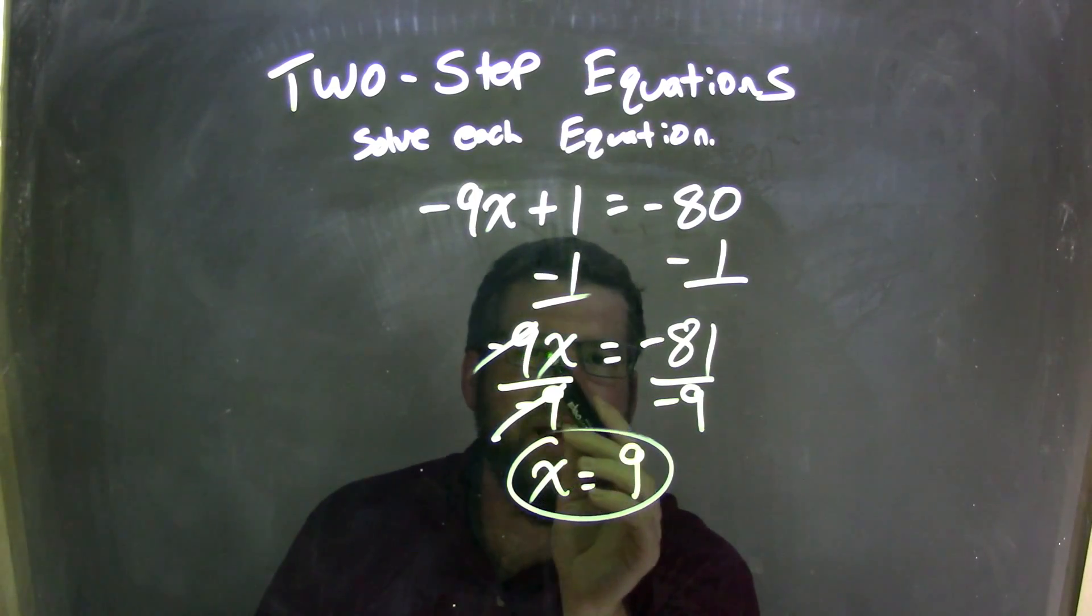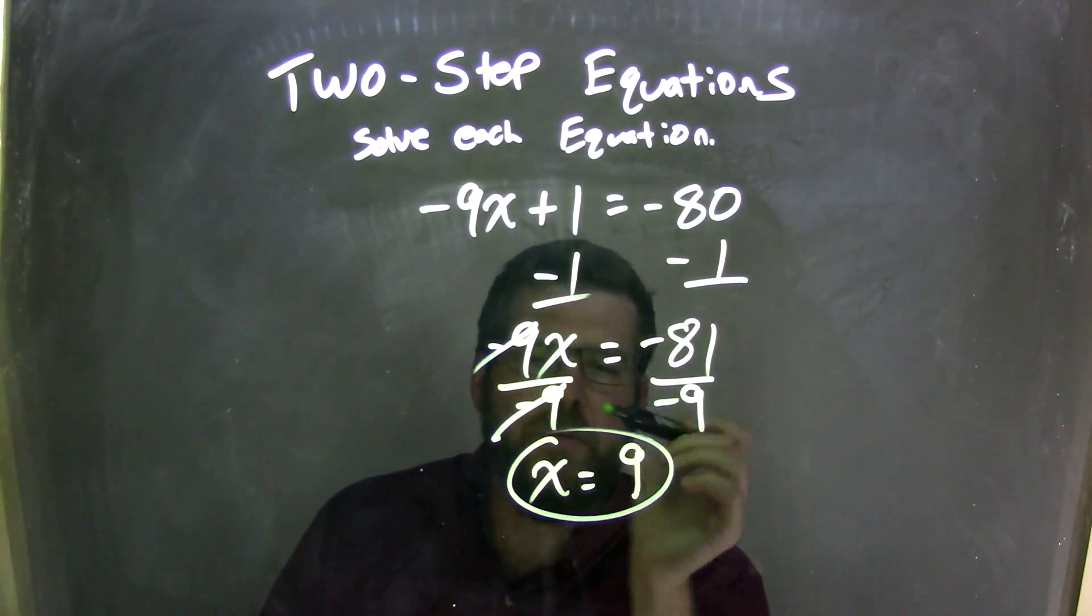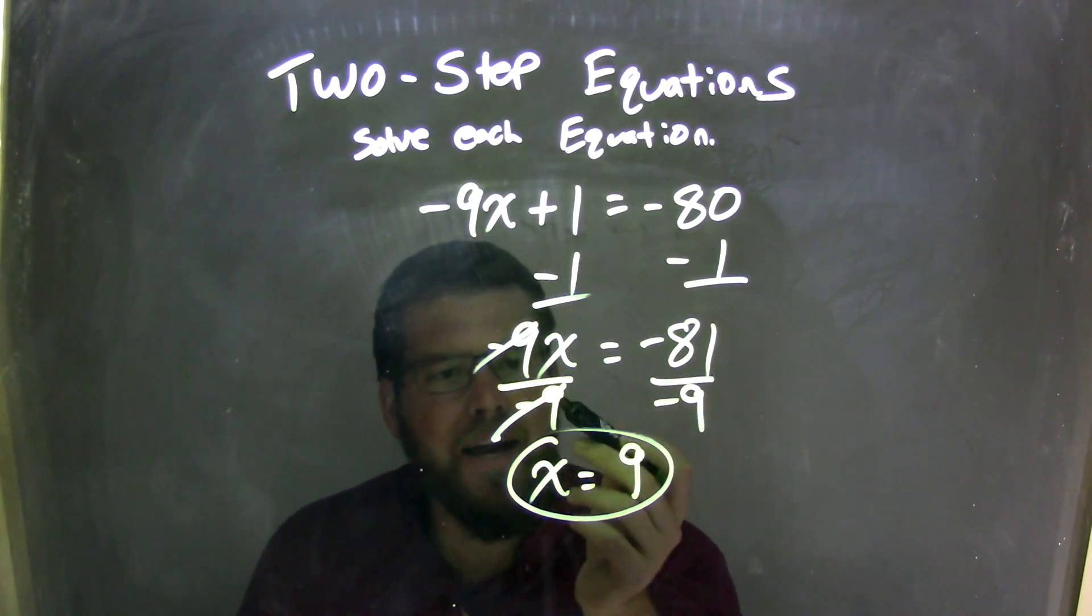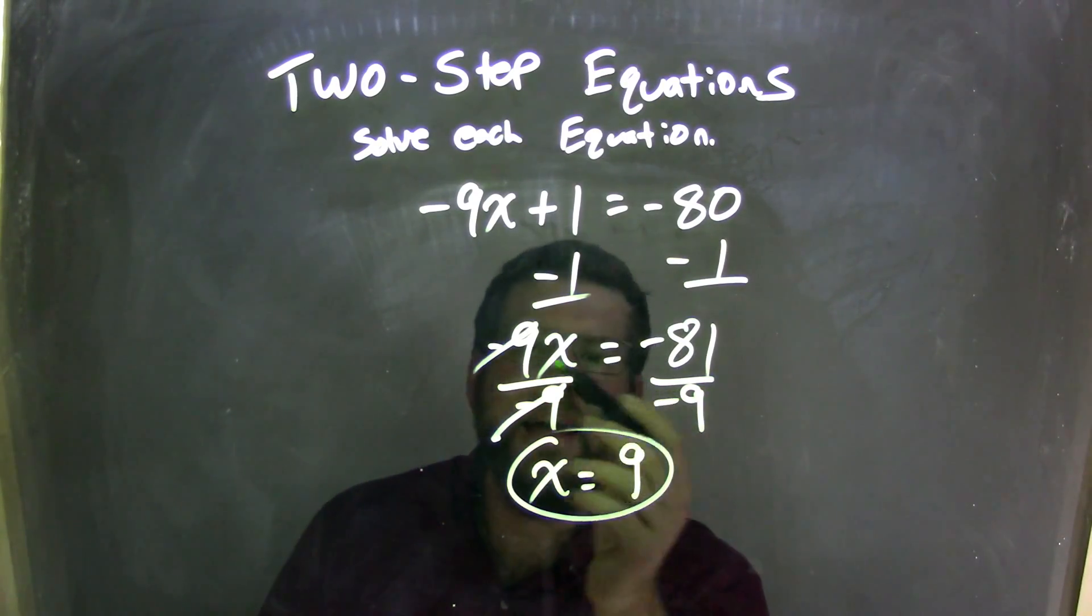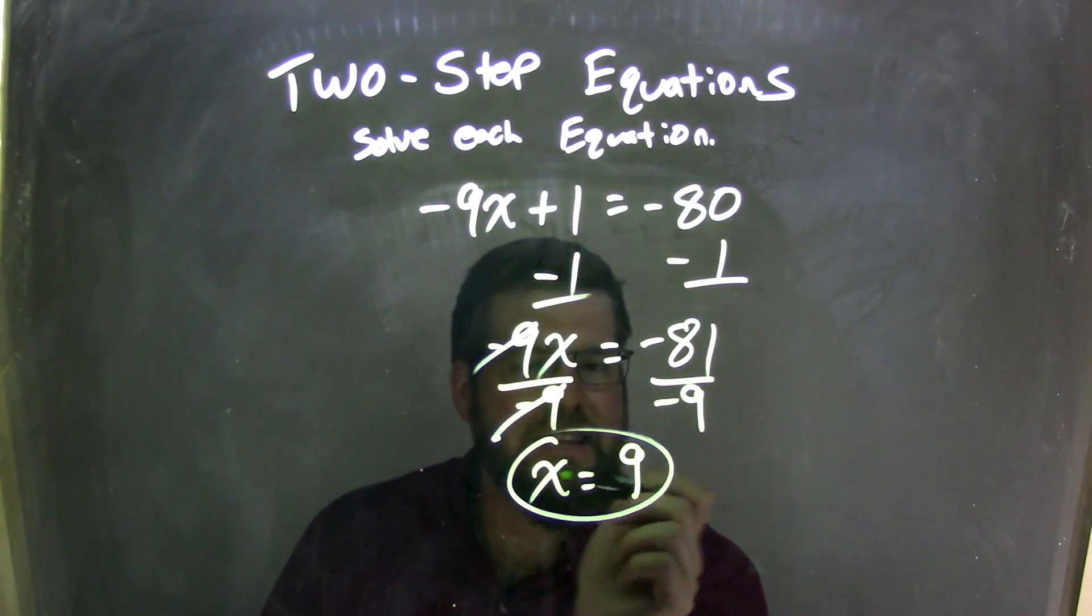I then have to deal with negative 9 times x. Opposite of multiplication is division. So I divided by negative 9 on both sides of the equation, canceling out the negative 9 on the left, leaving me with that x.